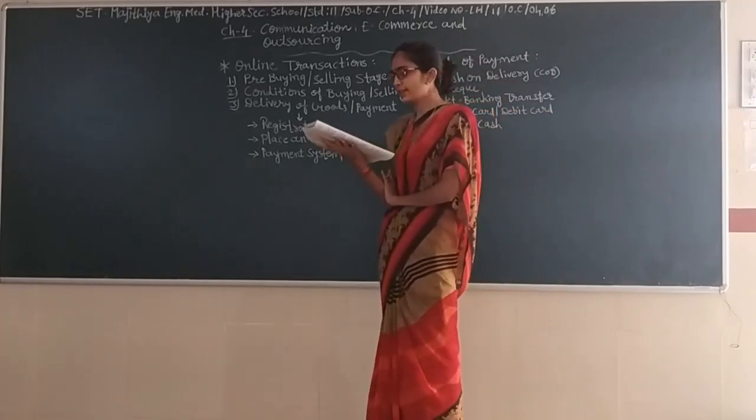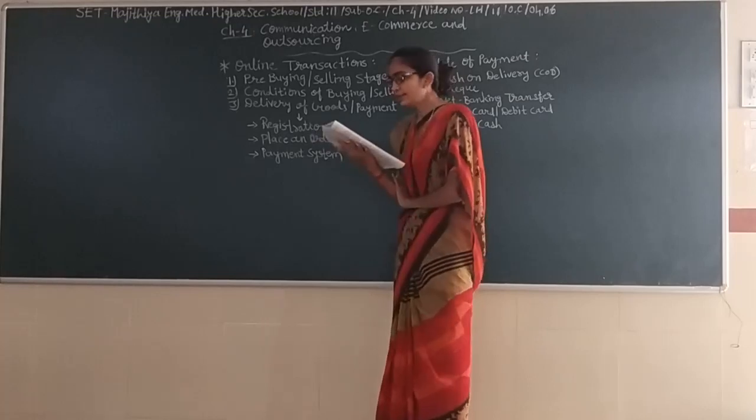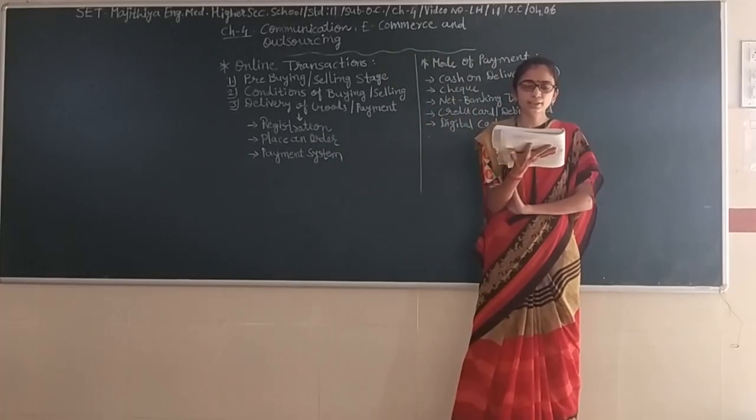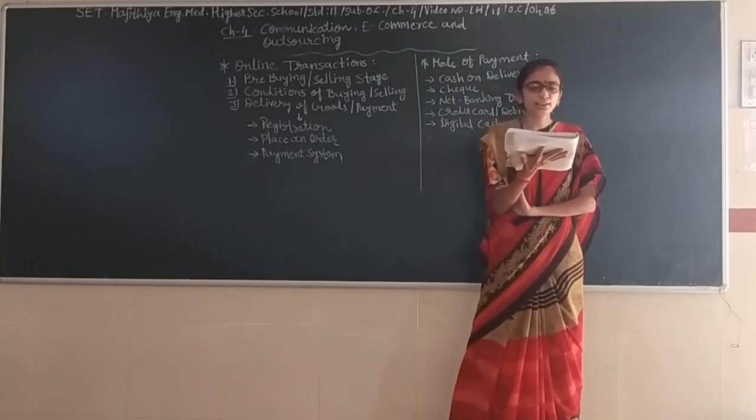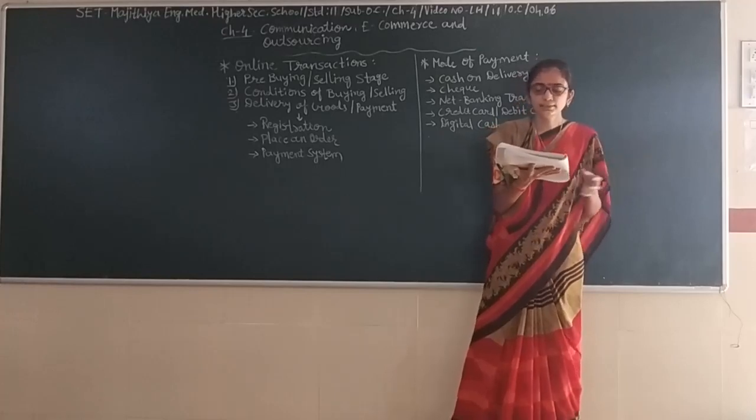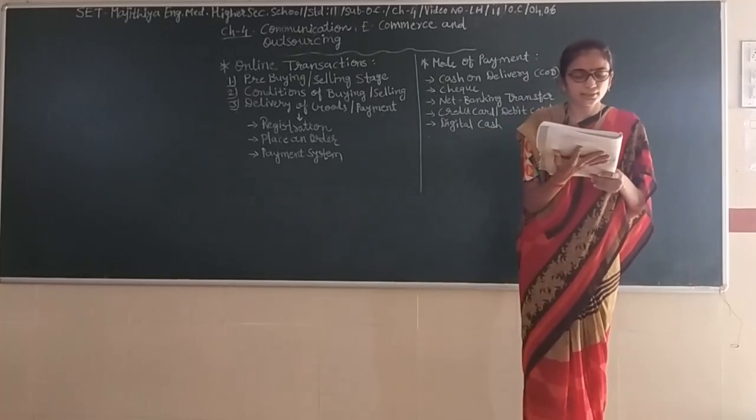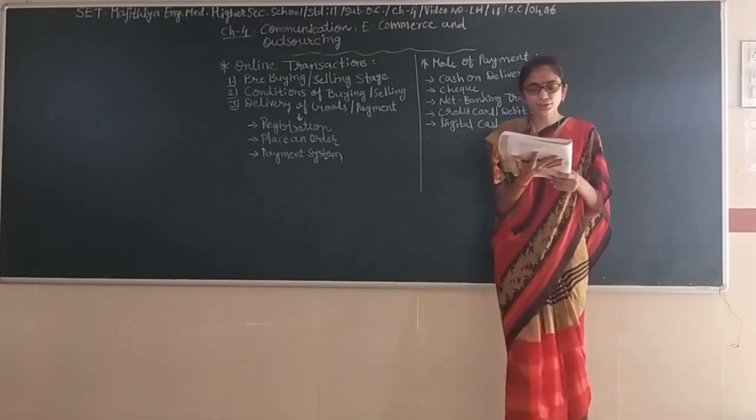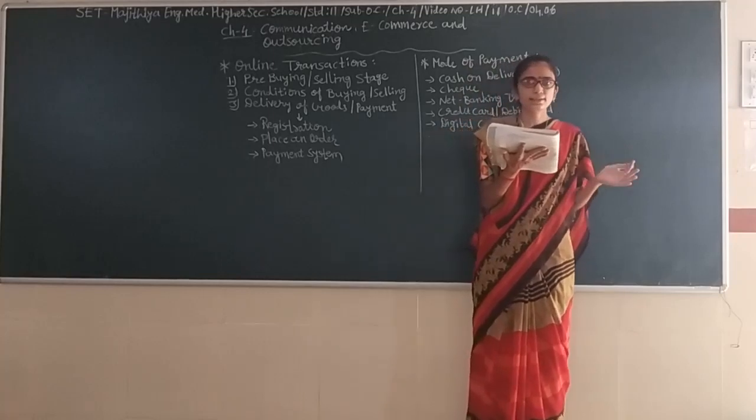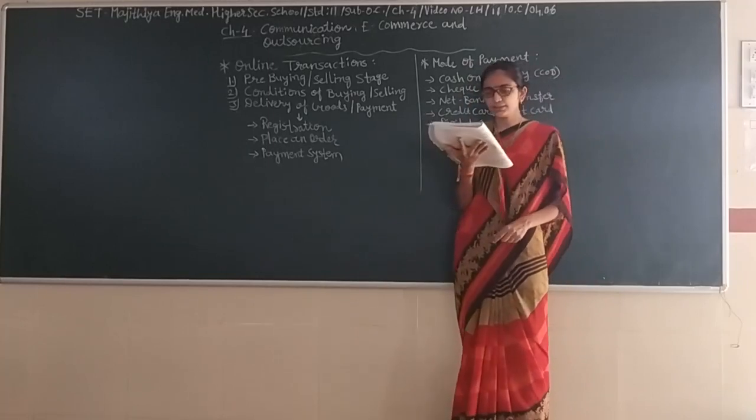Steps 4 to 9 transactions are given. First one, pre-buying or selling stage. They negotiate and fix conditions of buying and selling. This includes price fixation and other related conditions.